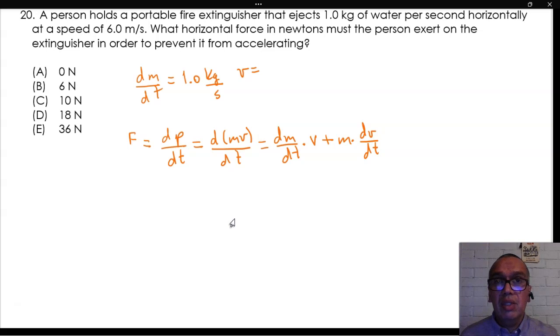Consider now that the speed is constant, which means the entire second term in the sum is zero. Then, the force is equal to dm/dt times speed.